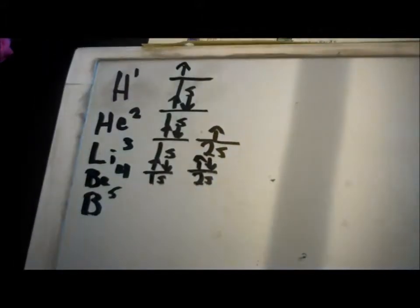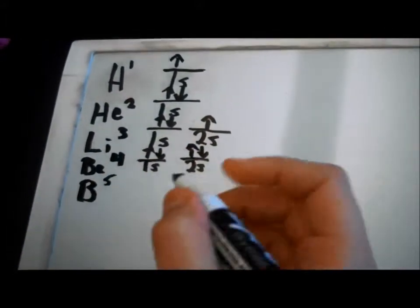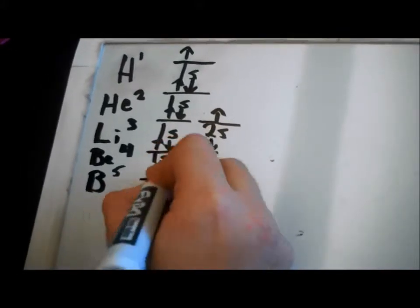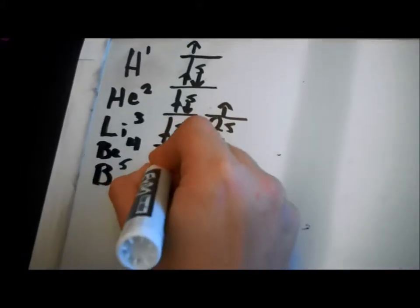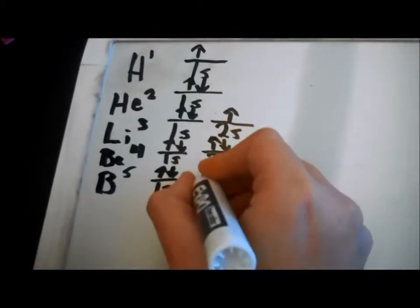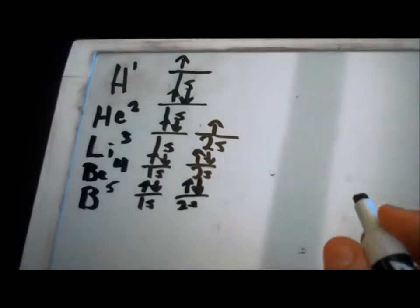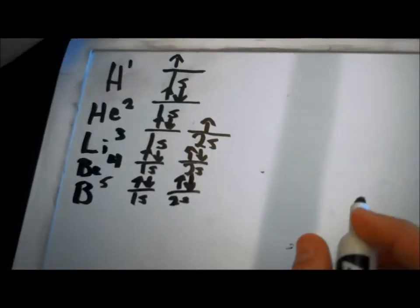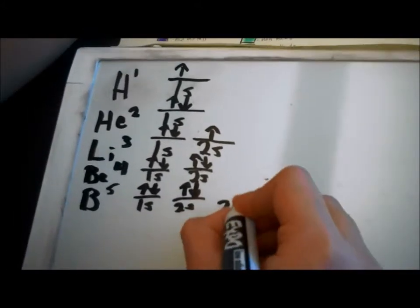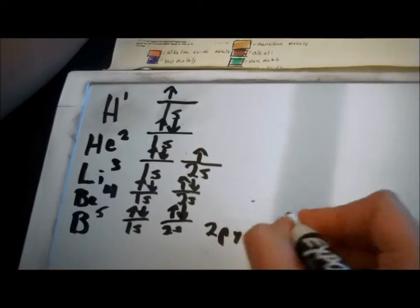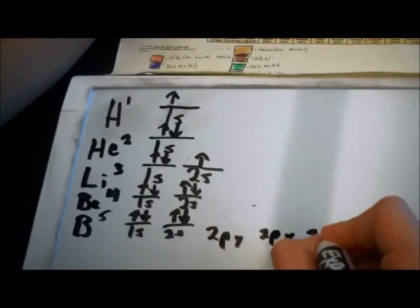Next is boron. And it has 5 atoms. So, 1s2, 2s2. And then you get into p's. So, 2py, 2px, and 2pz.